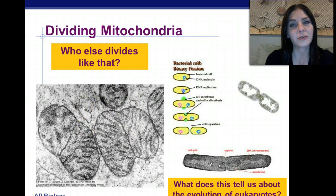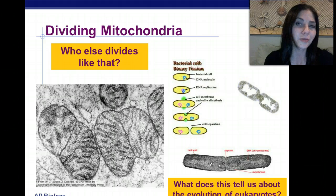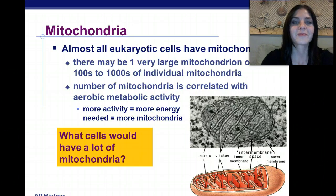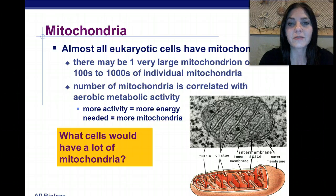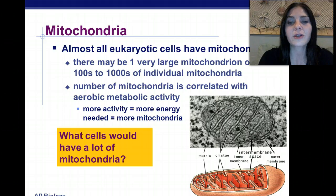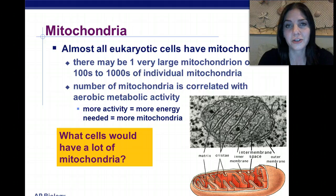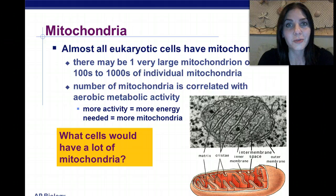What does this tell us about the evolution of eukaryotes? That's some food for thought, and I wouldn't be surprised if I saw this on a free response essay. Almost all eukaryotic cells have mitochondria — there may be one very large mitochondrion, or there could be hundreds to thousands in each cell. The number of mitochondria is correlated with the aerobic metabolic activity of the cell. The more activity, the more energy used, the more ATP synthesized, and the more mitochondria the cell will have.